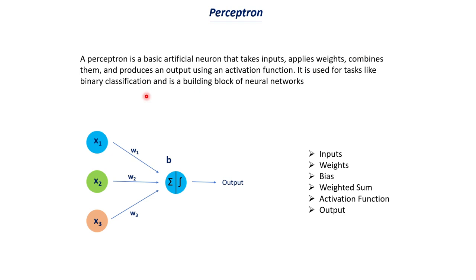A perceptron can be used as a standalone machine learning model — you would add an optimization algorithm like gradient descent and it can function as a standalone ML model. When used that way, it can only be used for a binary classification problem. When you combine several perceptrons as input layers, hidden layers, and an output layer, you get a neural network. A perceptron used standalone is less complex and may not give as accurate predictions as a full neural network.